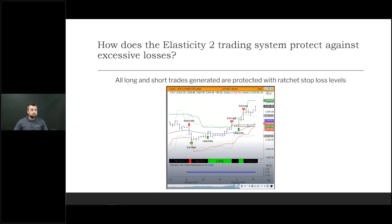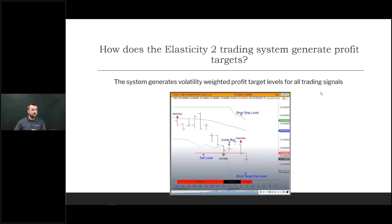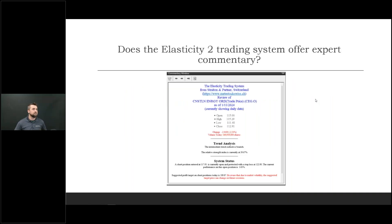How does the Elasticity 2 trading system protect against excessive losses? That's going to be with all long and short trades having protected ratchet stop loss levels — and I'm going to demo that for you. You also have volatility-weighted profit target levels for every single trade. It also comes with expert commentary that guides you throughout the entire trade, so you're not blindly trying to follow signals on your chart — you'll have full expert commentary on it.